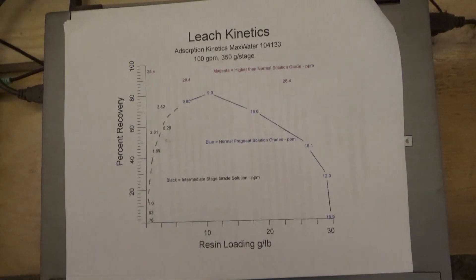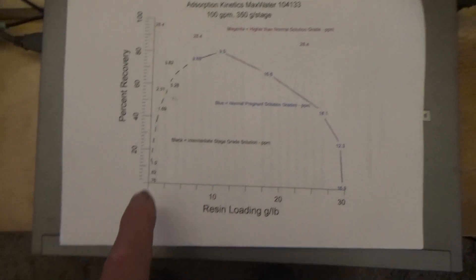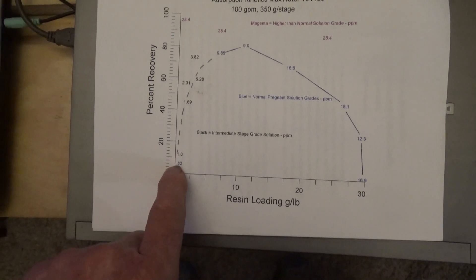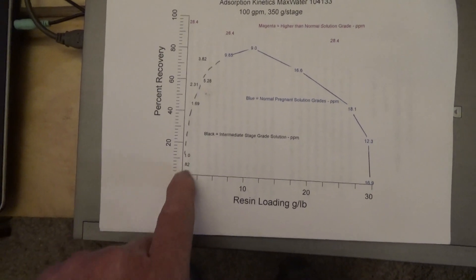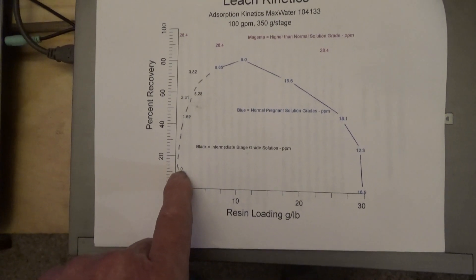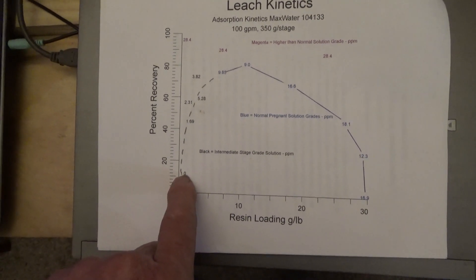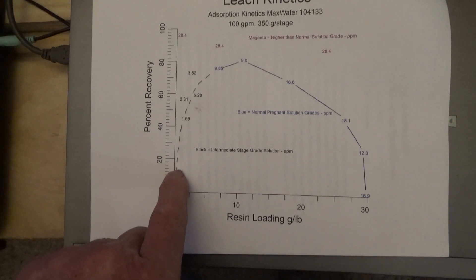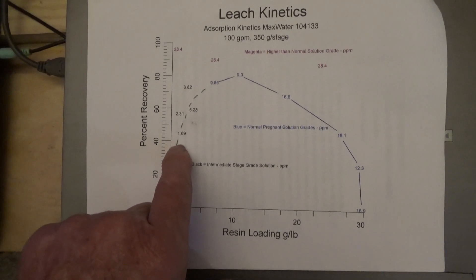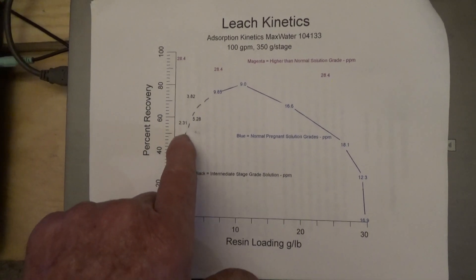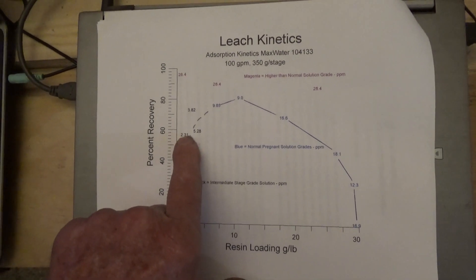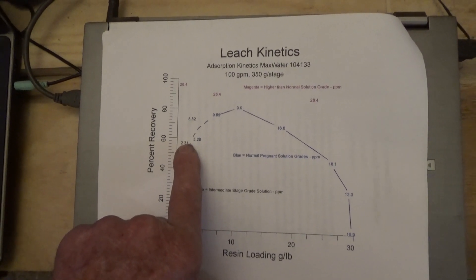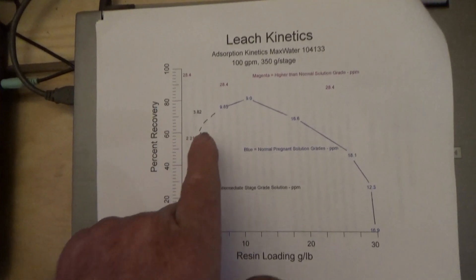Down here at this end, these are very low concentrations. The third dimension is the concentration of gold in solution in parts per million. Down here where we have less than one part per million, there's almost no recovery. Remember the equilibrium — it's just not going into the resin and sticking there.